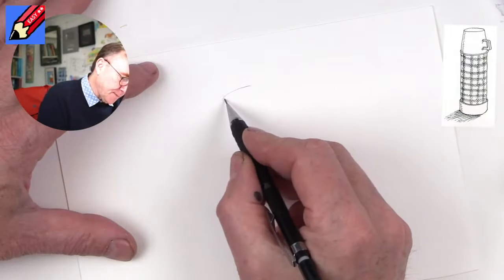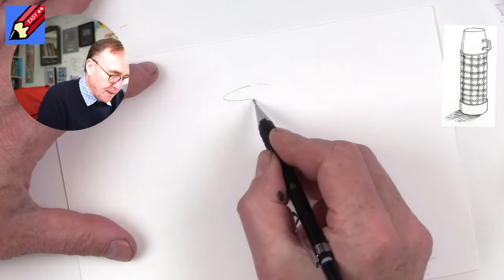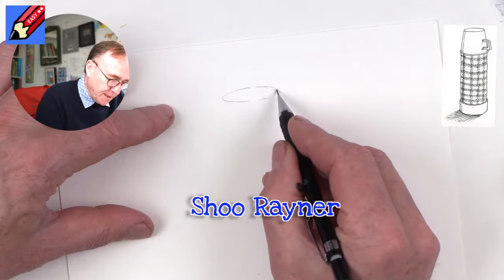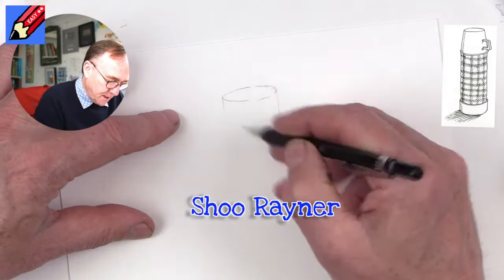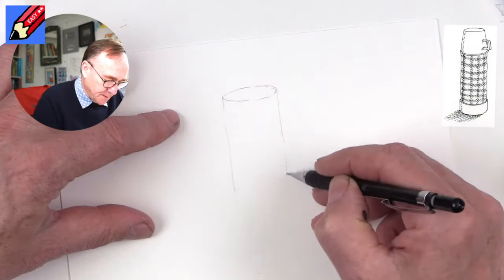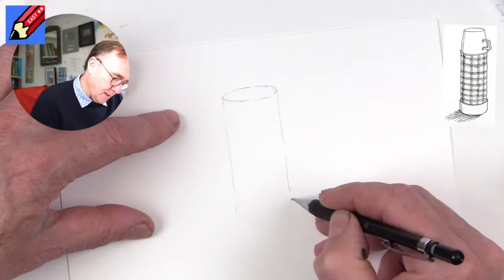A thermos flask is basically a cylinder, so we're going to need an ellipse at the top like that, and a cylinder goes all the way down nice and straight like that.